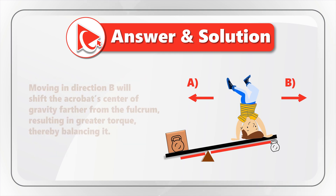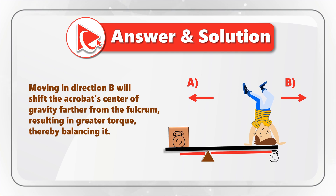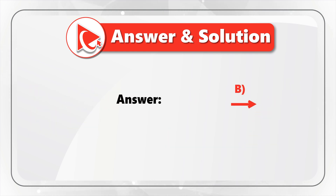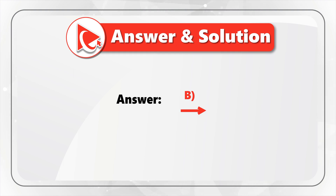If the acrobat moves in direction B, this will shift the acrobat's center of gravity further from the fulcrum, resulting in a greater torque, thereby balancing the seesaw. So the correct answer is Choice B — moving the acrobat to the right.